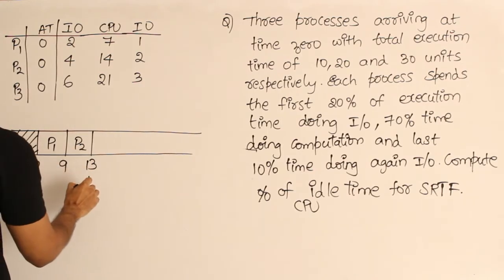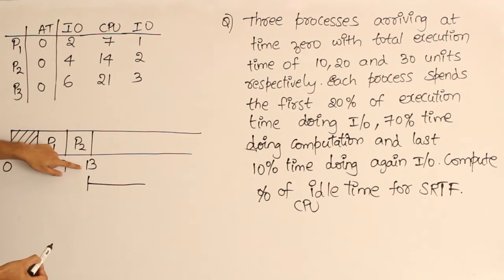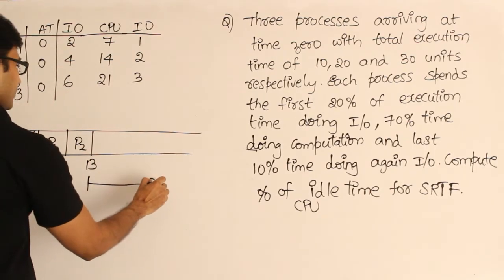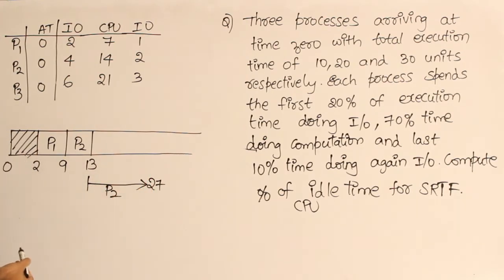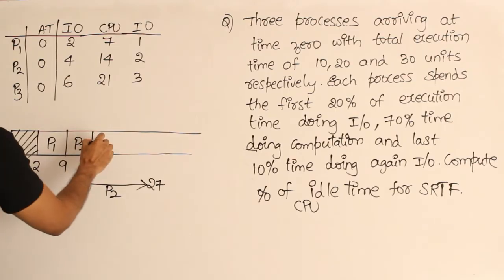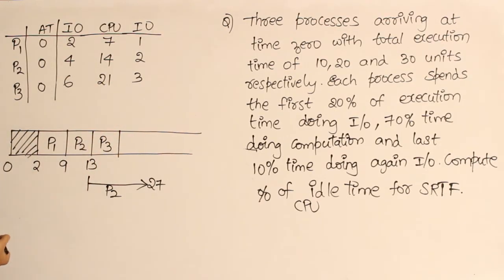At this point P2 will go for I/O. If it is starting at 13 to go for I/O and it requires 14 units of I/O, therefore it is going till 27 units. P2 will go for I/O till 27 units. Now in the meanwhile, you cannot keep the CPU idle. P3 is available, so let's schedule P3.